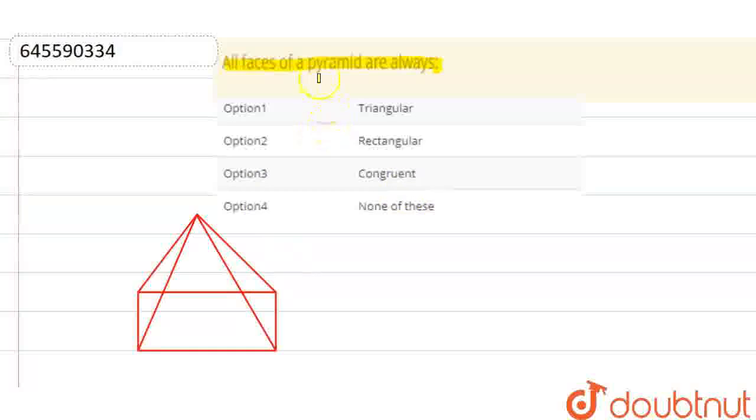That means the faces of all pyramids are triangular. So, option first is the correct answer. Option first is the correct answer.